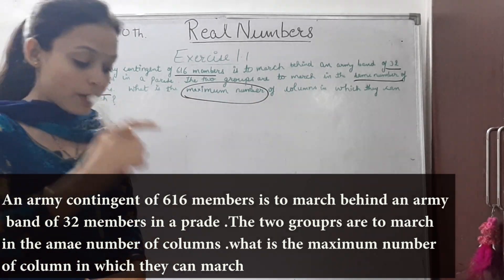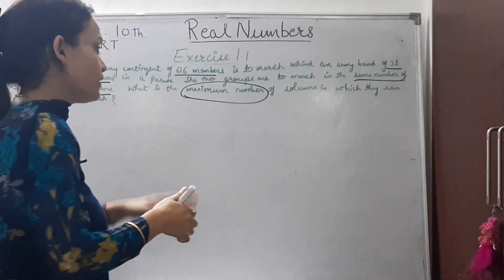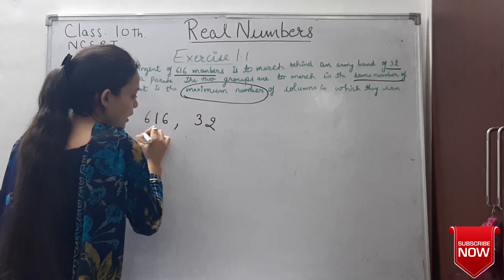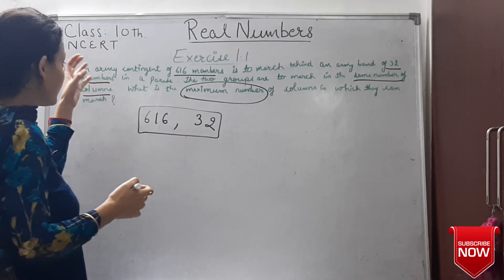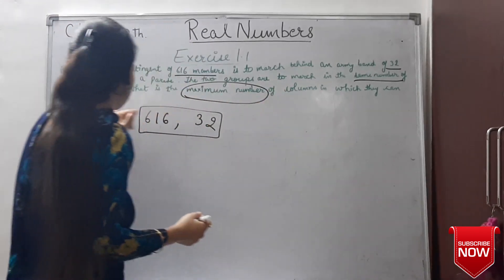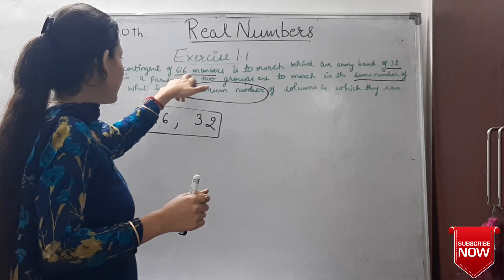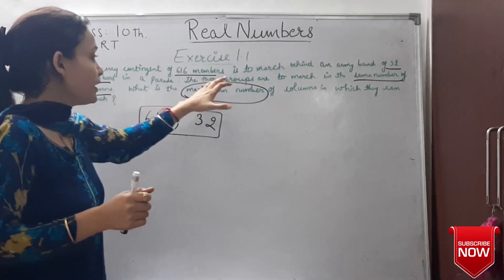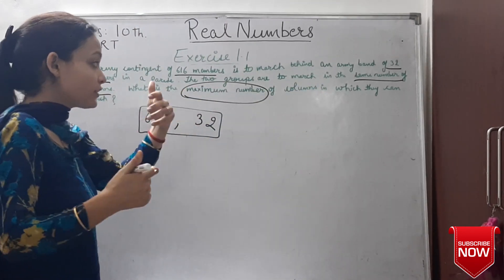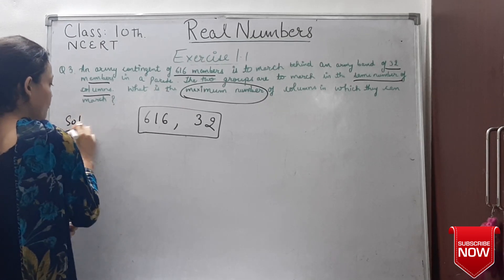We need to find the maximum number of columns. Now, maximum number means highest — so we will calculate the HCF, the Highest Common Factor, of 606 and 32. The maximum number of columns will be the HCF of these two values. So how much will it be? The maximum number will be the HCF — let's calculate it.